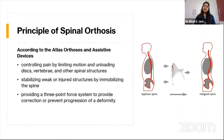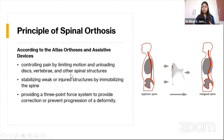The major principles on which spinal orthosis works — there are three brief principles. The first is controlling pain: it helps control pain by limiting the range of motion, which unloads pressures over the disc, vertebra, and other spinal structures, thereby limiting pain. The second principle is basic stabilization — it adds extra support to stabilize weak or injured spinal structures, immobilizing the spine and promoting healing.